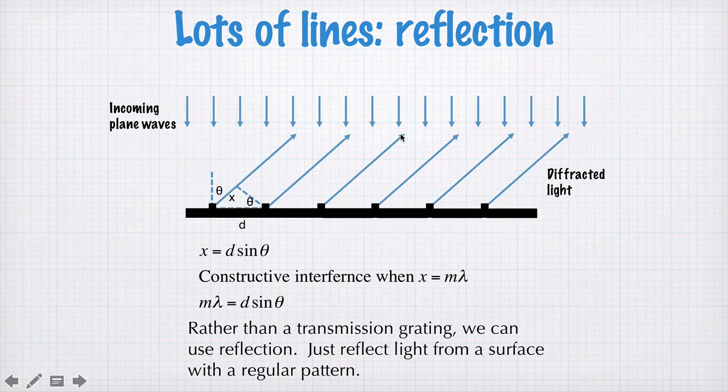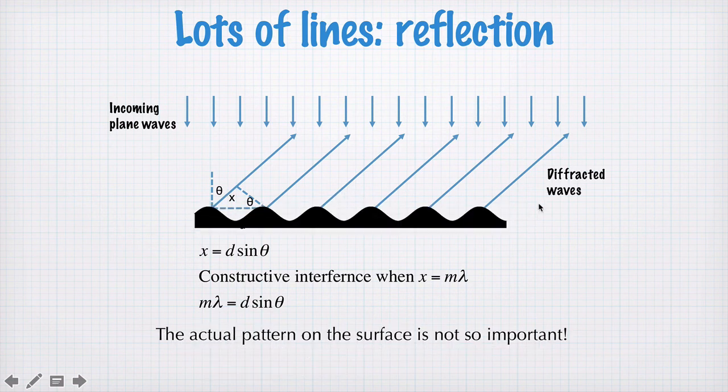A different way of doing many slit diffraction is not to use slits, but rather to use reflection. So if you have a mirror here, but the mirror has regular lines ruled into it, or little lumps at regular intervals, and the distance between these lumps or these ruled lines is d, then the light reflecting off these little points here will also reflect into spherical waves. And then we get diffracted light from reflection, and the condition is exactly the same. So rather than light being transmitted through the screen, we can put regular lines on the screen and get diffraction on reflection.